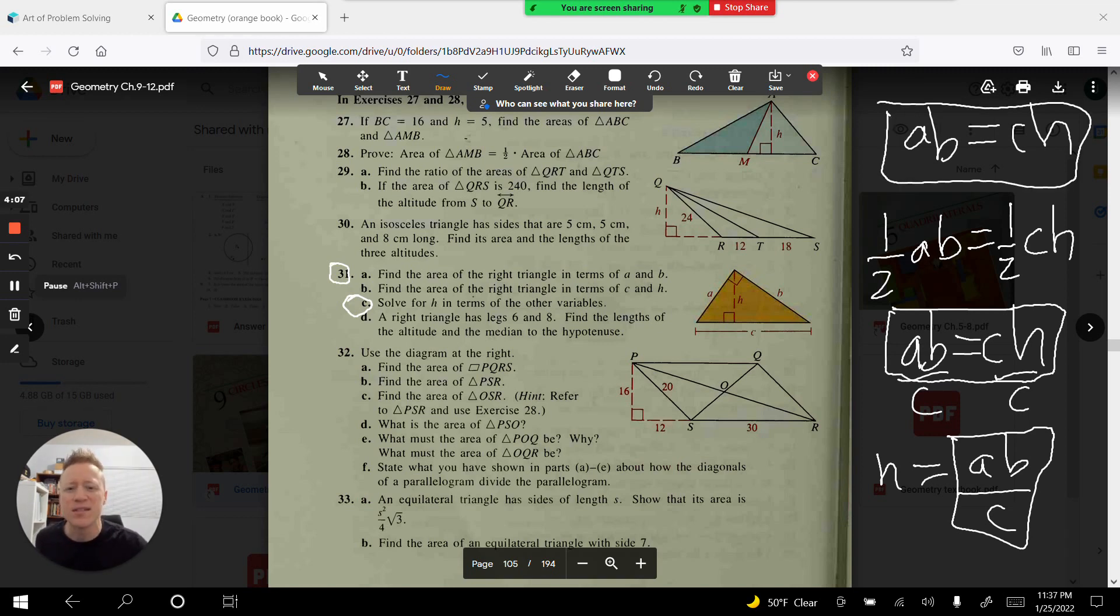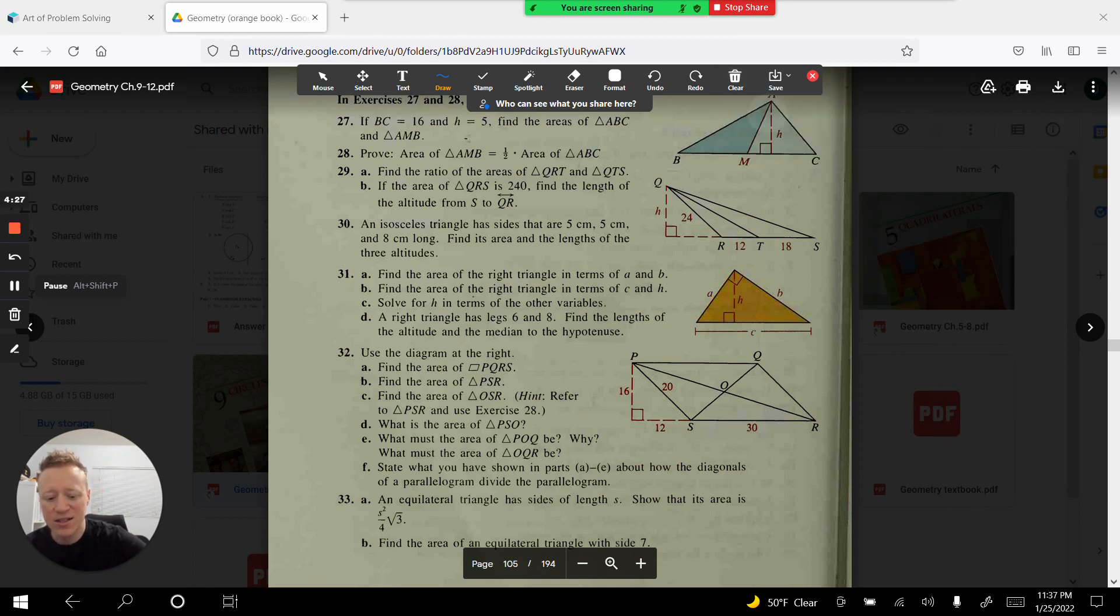You cannot just focus on getting the work done. The problem is just the start of the work. The work is happening up here as you think and analyze about what these things mean. And don't just look at it as A B equals C H. Turn it into the ideas that it represents. It represents the product of the base and the height. And for a triangle, since its area doesn't change, the product of the base and height will never change for any base choice with its associated height.